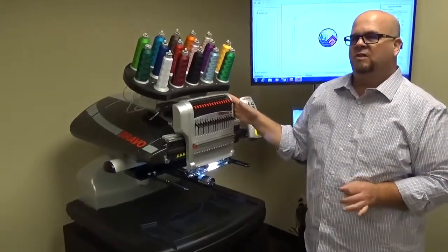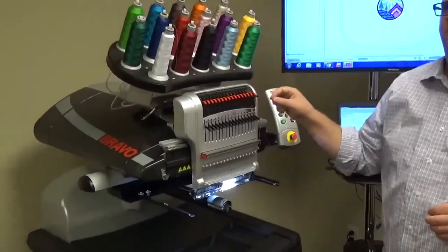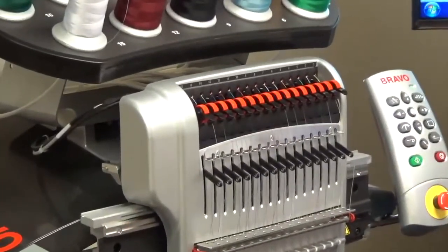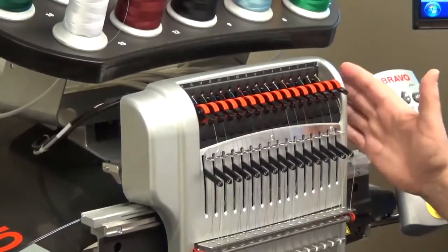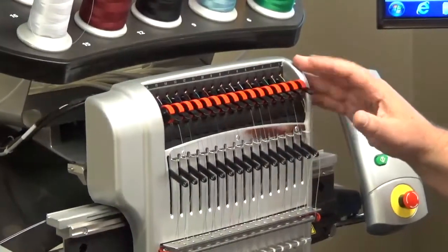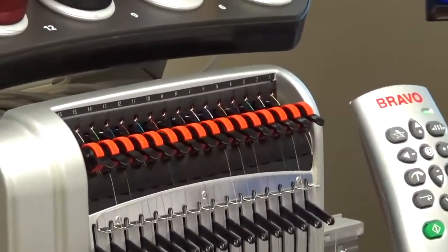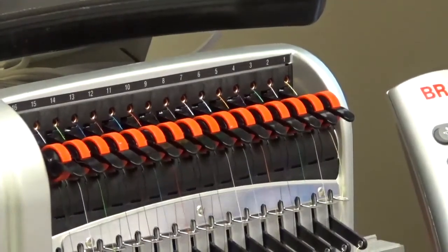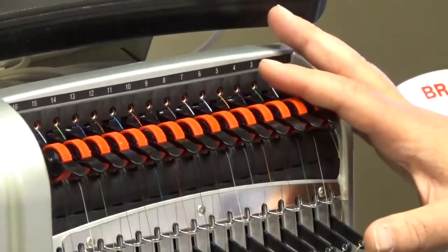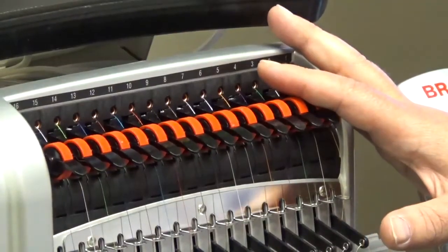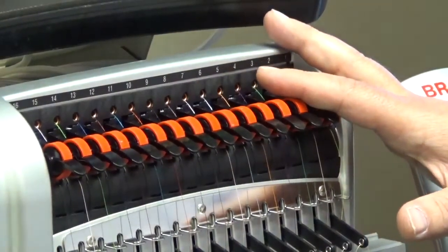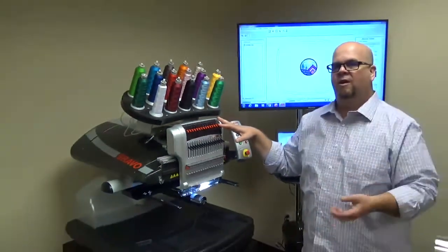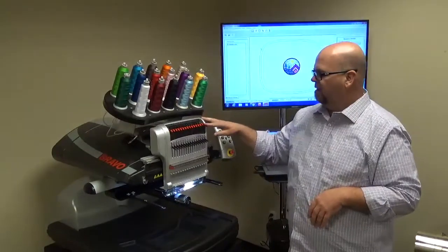The Bravo uses a system called ActiFeed. So instead of a tensioning system, like what you would see on your sewing machine or other types of embroidery machines, we are actually actively feeding the thread down to the material. So instead of getting issues with tensioning and not knowing where to set it, we actually automate that process. And we'll get into that in the next video on the software overview of how the ActiFeed system can be controlled and what information it needs from you.